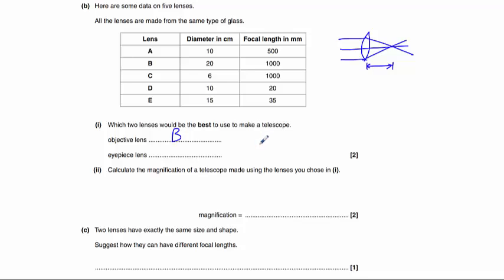Now for the eyepiece lens, you want a powerful lens with a very short focal length in order to best magnify the image that's been formed by the objective lens. So for our eyepiece lens, we need to choose the shortest focal length. In this case, that would be lens D.